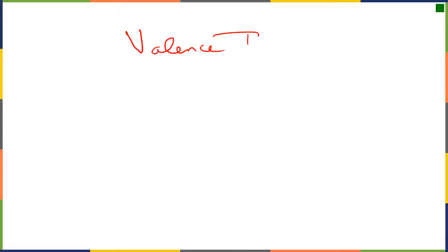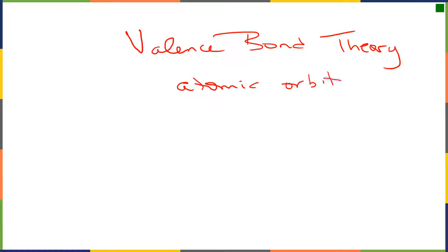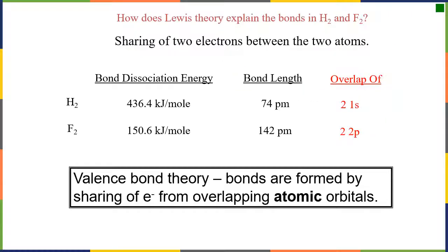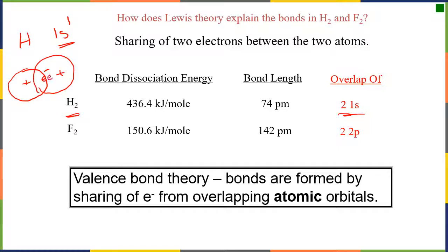We left off on Lewis structures and when we talked about our Lewis structures we were using valence bond theory. Valence bond theory said that the electrons we were using for our bonds came from the atomic orbitals. We need to keep that in mind as we go through the next few slides. If we consider bonding in hydrogen, hydrogen has one electron, that's 1s1. That electron is in the 1s orbital, and what we get is an overlap between the orbitals from one hydrogen and the other, and this overlap corresponds to our bond — overlapping 1s orbitals.